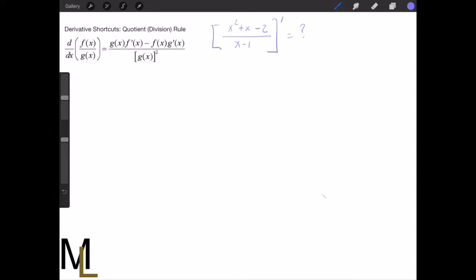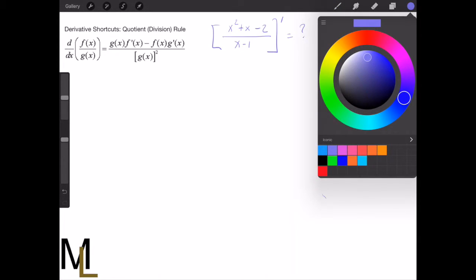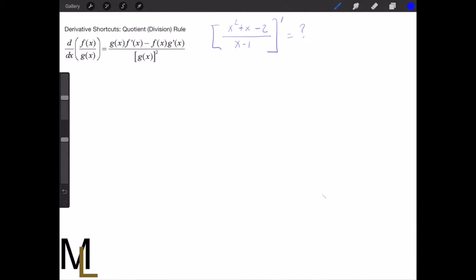Okay, so now that we've gone over the product rule, next we're going to look at the quotient rule, which is when you actually, instead of multiplying two functions, you divide them.